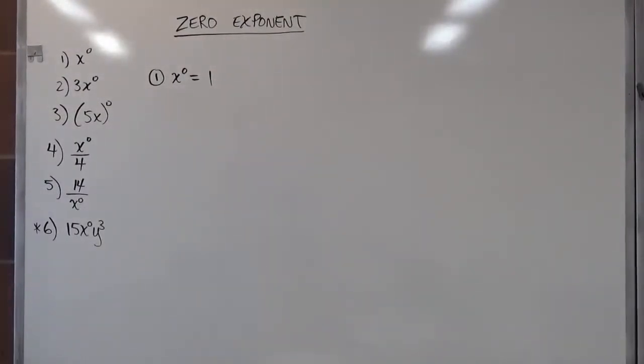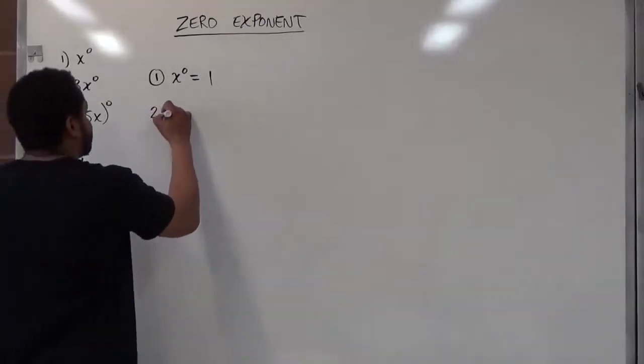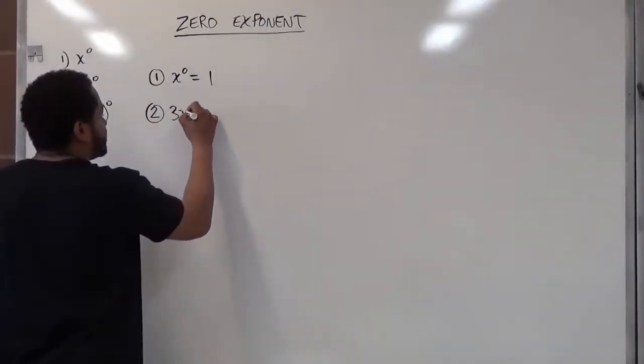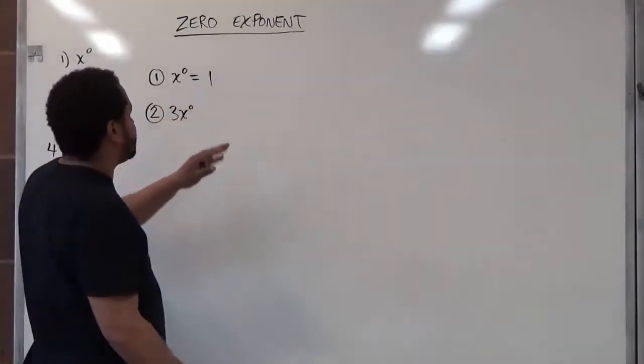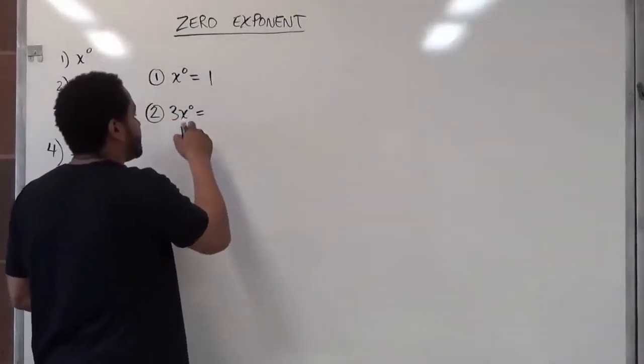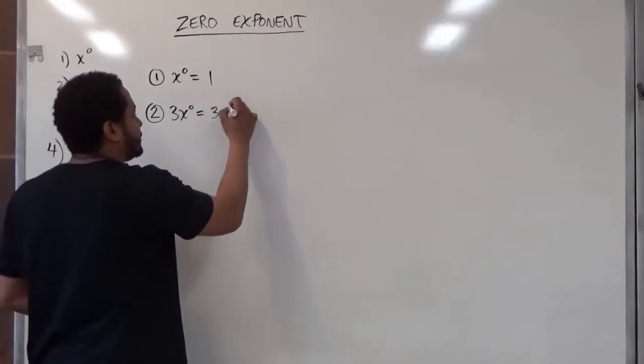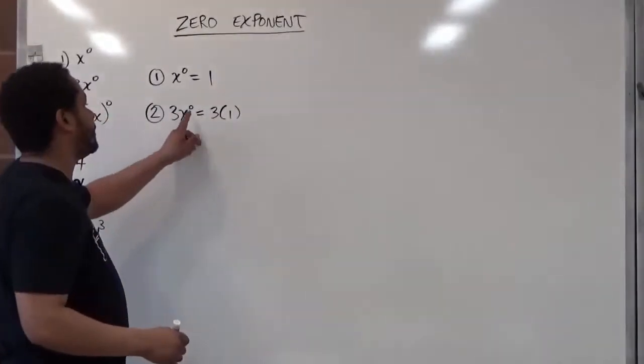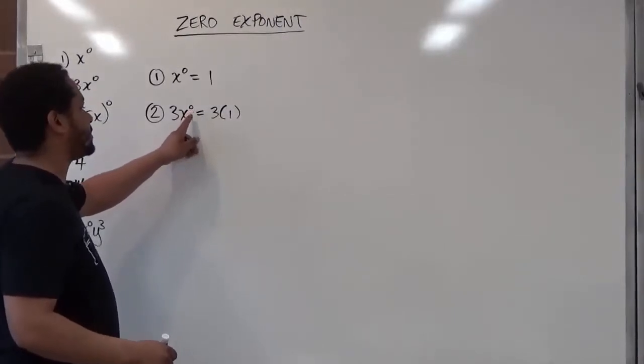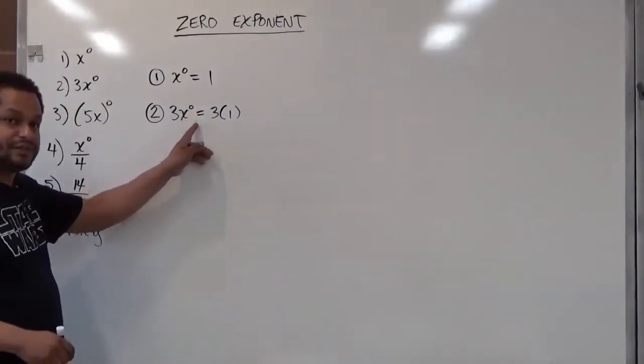Now the application of this works a little bit differently. In problem two we have a multiplication of three times x to the power of zero. What occurs here, as we know x to the power of zero is one, we're going to substitute x to the power of zero with just the value of one. Now also remember that the zero exponent is only affecting what it's next to. It doesn't affect the whole thing.